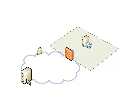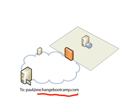To demonstrate at a high level how DNS comes into play for message transport, let's imagine we've got a server out on the internet that wants to send mail to paul@exchangebootcamp.com. The sending server needs to know where to send mail addressed to exchangebootcamp.com, so it's going to query a DNS server and ask where it needs to send this mail for exchangebootcamp.com recipients. That DNS server is going to answer with what is known as the MX record.